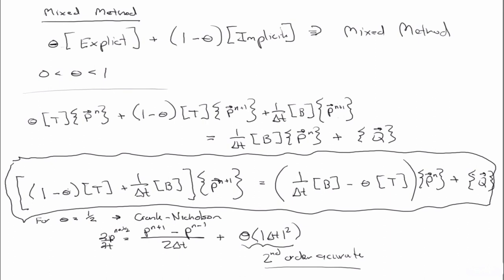And you can see that for any value of theta not equal to 1, then you actually have to invert what's on the left hand side here to solve this system of equations. So there's as much work involved as solving an implicit method, but you have a more accurate in time discretization. So again, that's mixed methods.